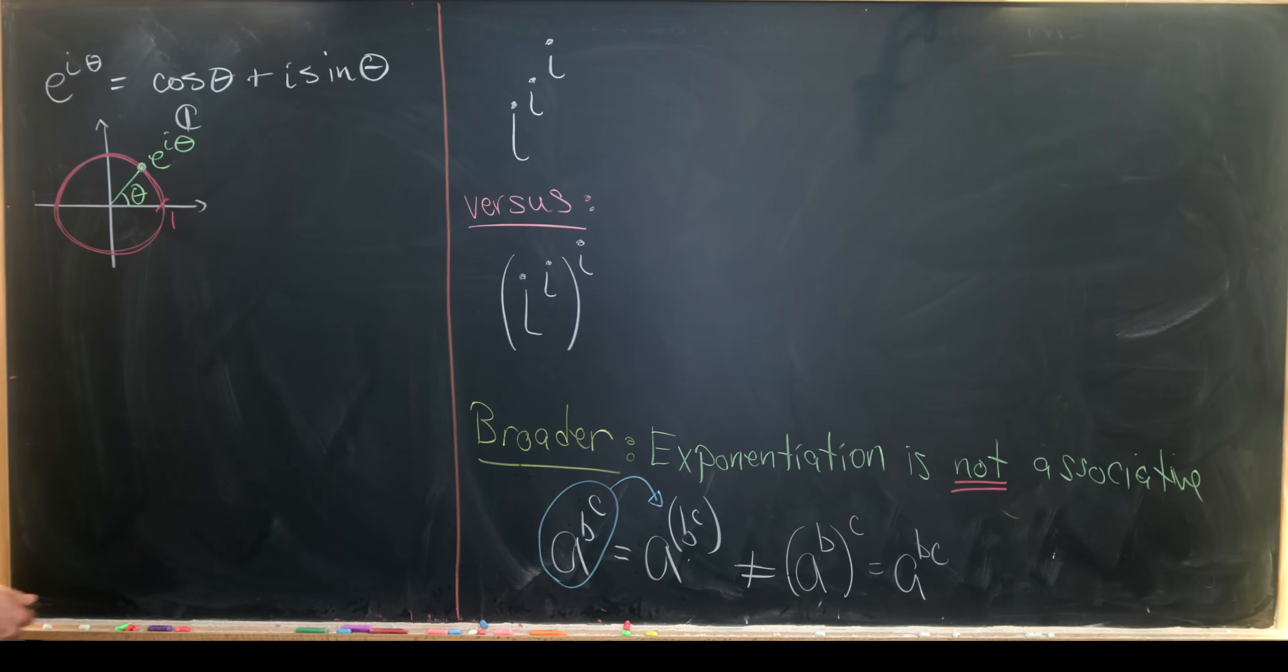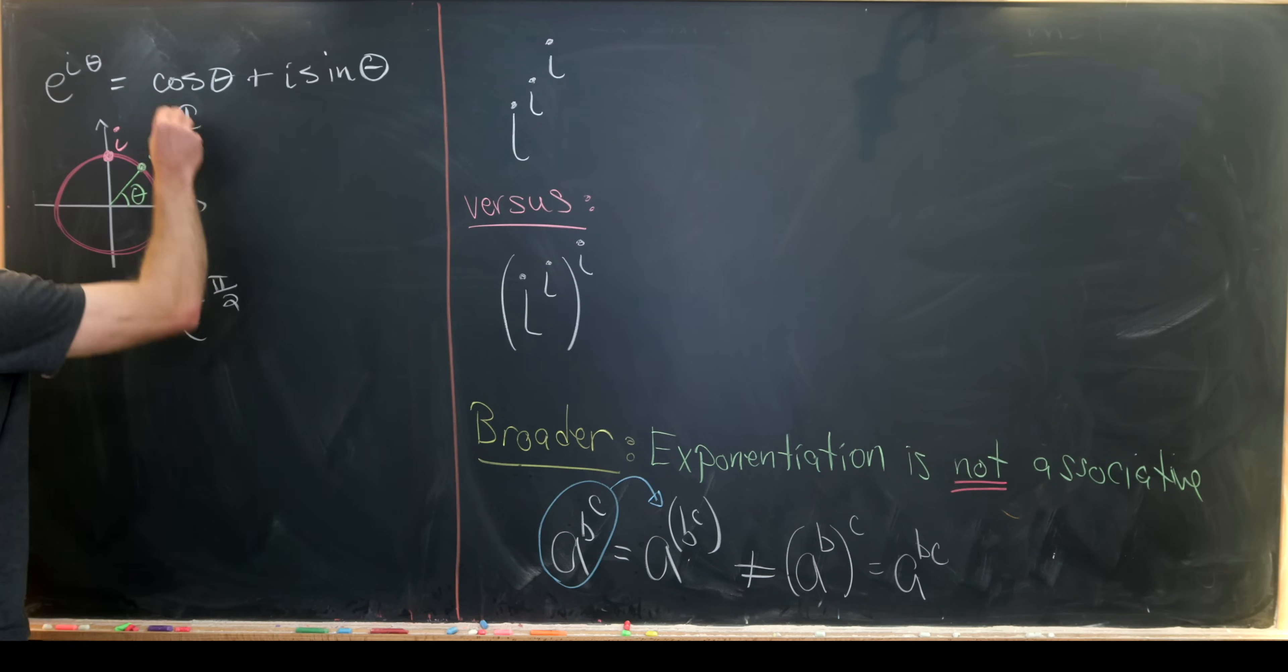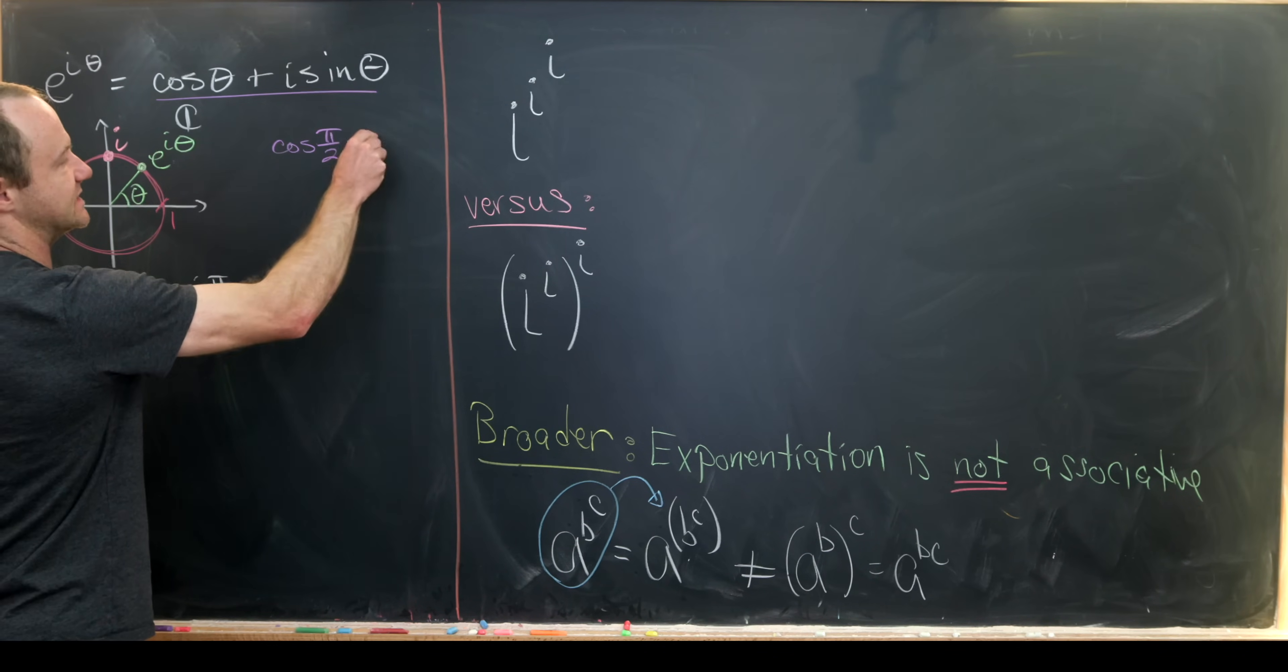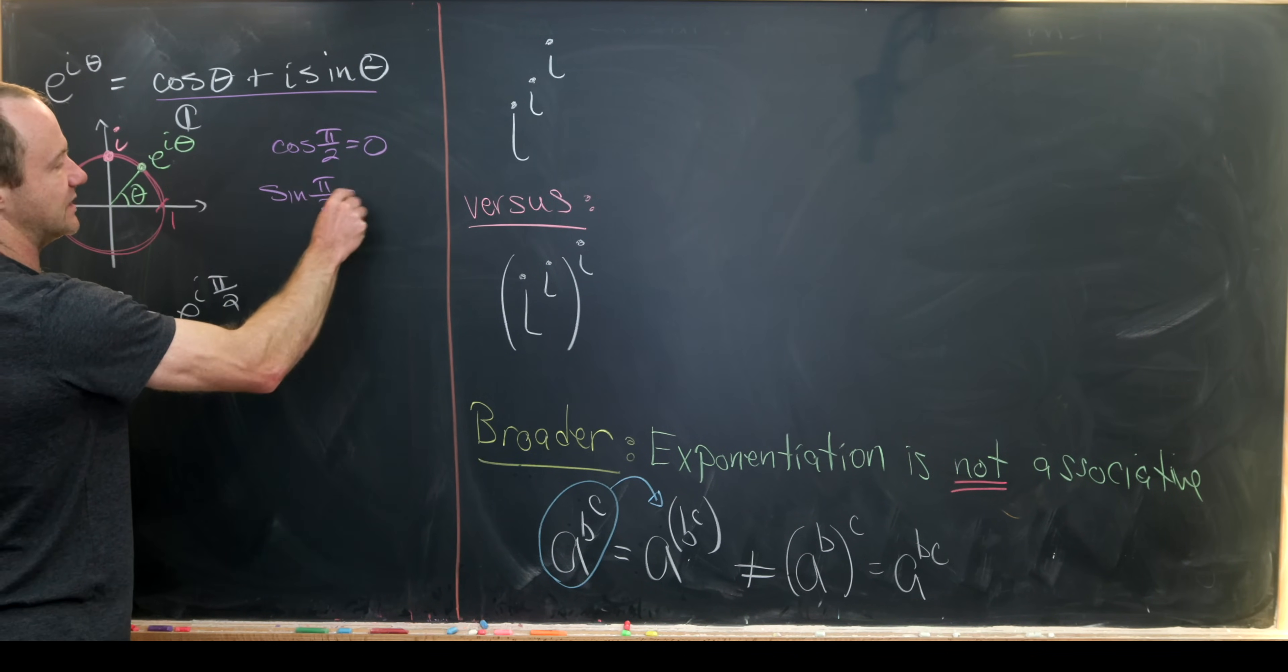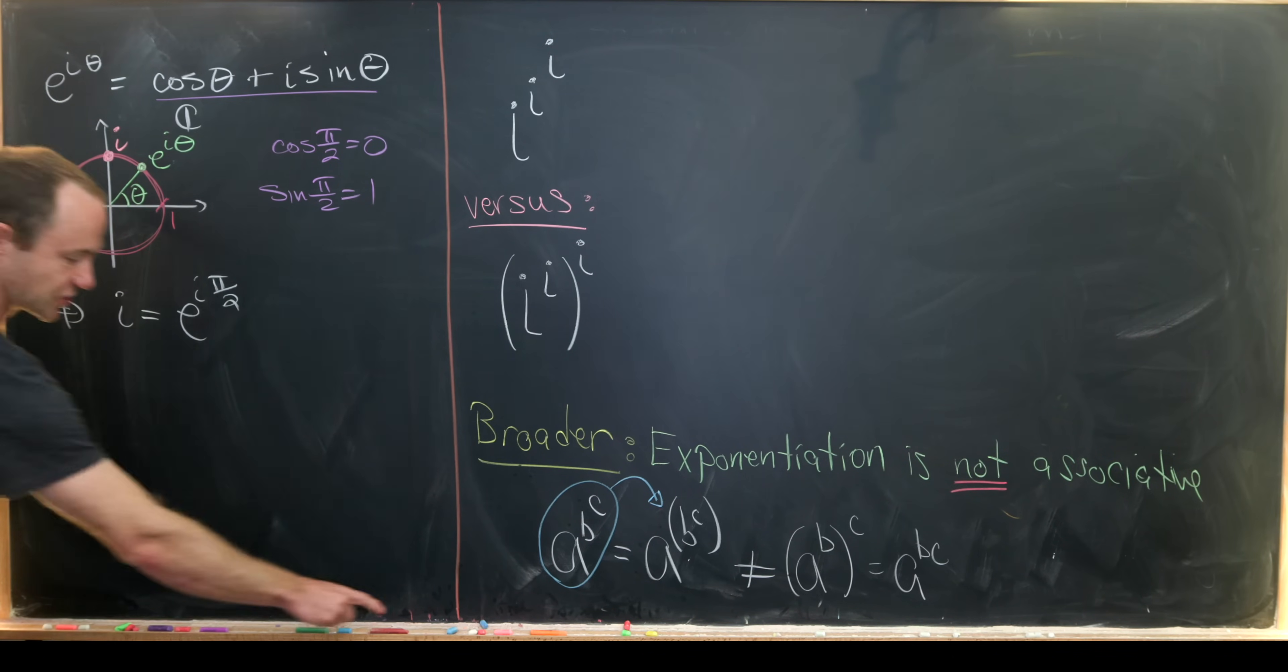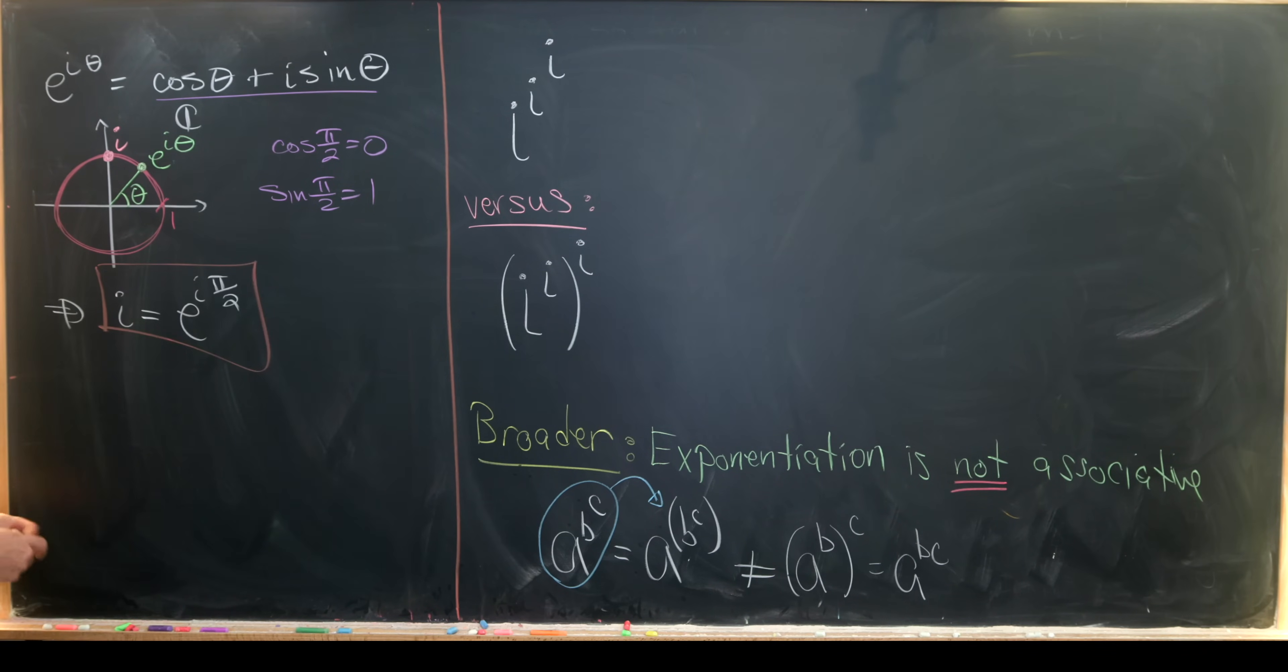But now let's notice that the number i is right here, so it's on the imaginary axis, it's one unit from the origin along the imaginary axis. So that means we can write i as e to the i pi over two. And that's backed up by this Euler's formula right here, given that cosine of pi over two is zero, whereas sine of pi over two is one. Okay, but this is essentially the big trick in order to calculate these power towers of i: to use this polar form.